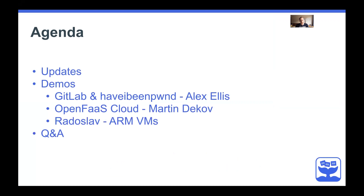Today I'm going to start with some updates from the project. We've been building a lot of features with a really good cadence across the community. Then we've got some demos: I'm going to show a GitLab integration with OpenFaaS and a new function called Have I Been Pwned, from Troy Hunt's website, which lets you check whether a password has been compromised in a data breach. Martin from my team in Sofia at VMware will show OpenFaaS Cloud in action with multiple commit statuses, and Radoslav is going to tell us about ARM virtual machines and how they can help us work with Raspberry Pi.